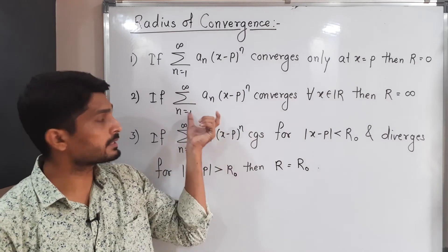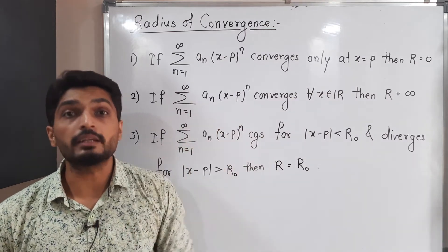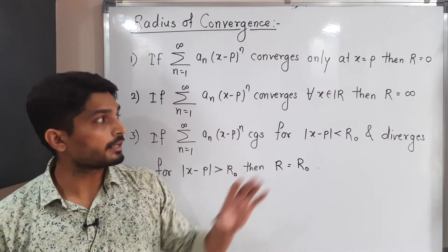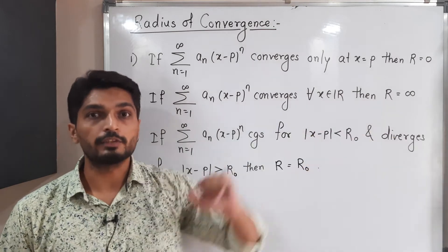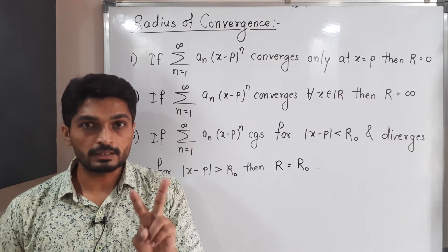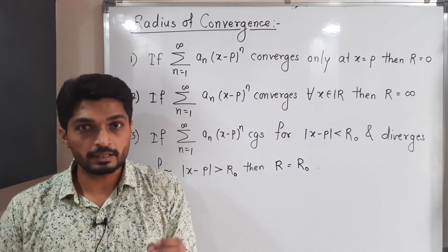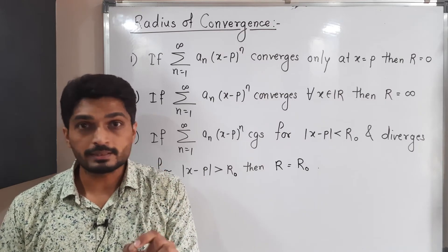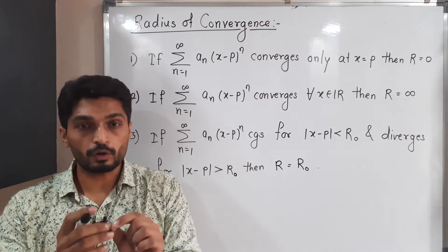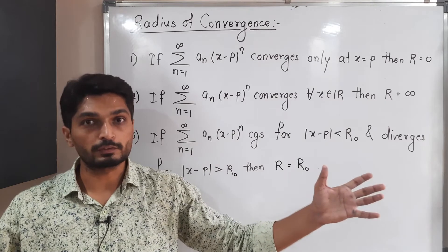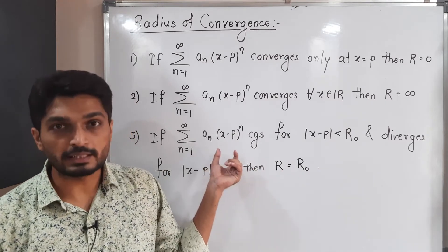If this power series converges for any real number, then its radius of convergence is infinity. So that means these are two extreme cases. At only point p the series is convergent, and for all points the series is convergent. Now let us discuss the middle cases.